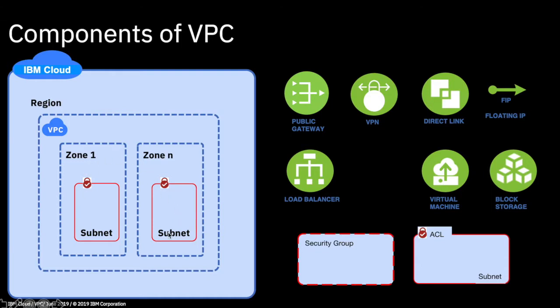Looking at the different components: Public gateways provide access to the internet for your VPC and are attached to subnets. You can decide whether to keep a subnet private — if so, don't attach a public gateway to it, as that will give it internet access.